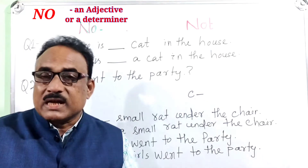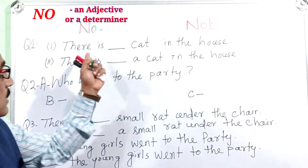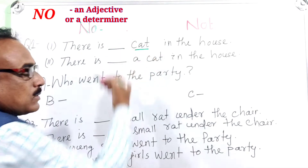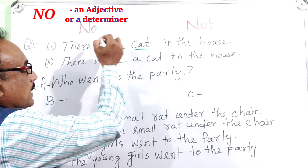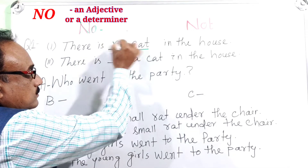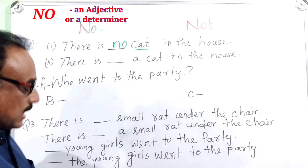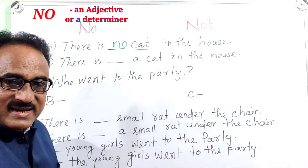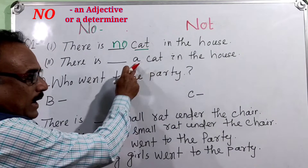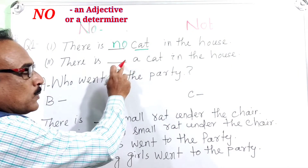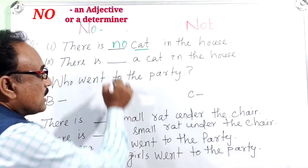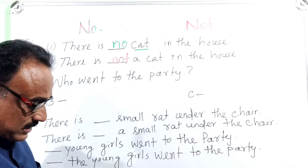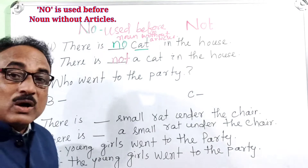Both 'no' and 'not' are used in a negative sense. For example: 'There is dash cat in the house.' Here 'cat' is a noun. 'No' is used before a noun without an article.